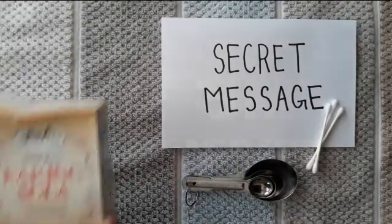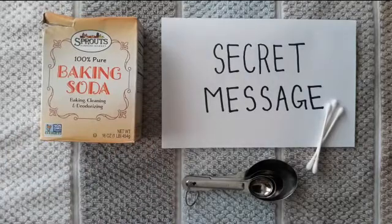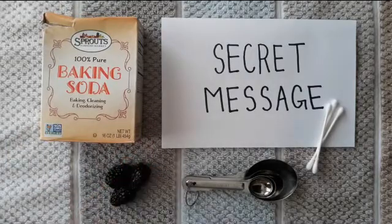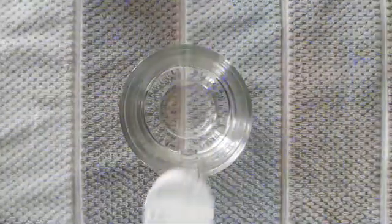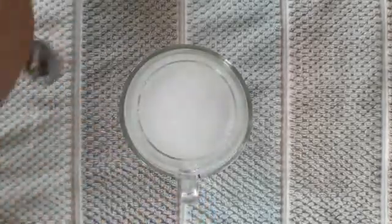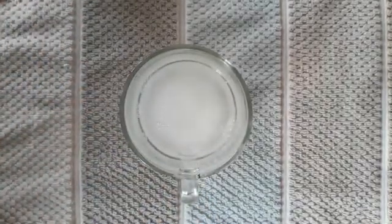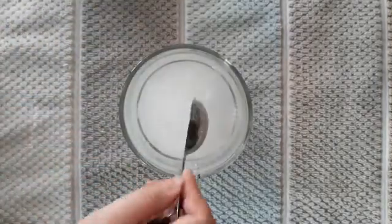You'll also need baking soda, some blackberries, and a cup of water. First, you're going to take your measuring spoons and scoop two tablespoons of baking soda into your water. Make sure to stir your water for about a minute to make sure most of the baking soda dissolves.